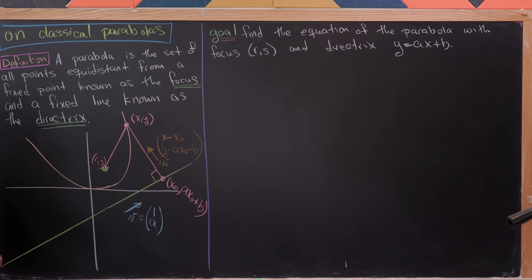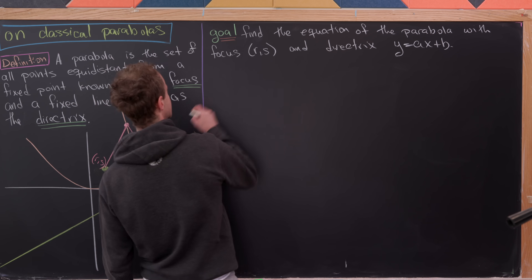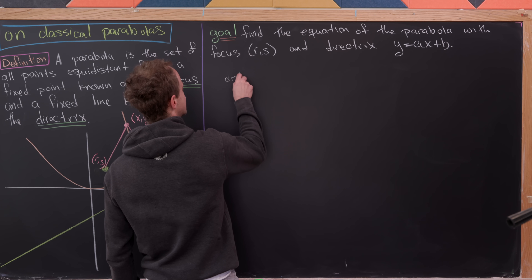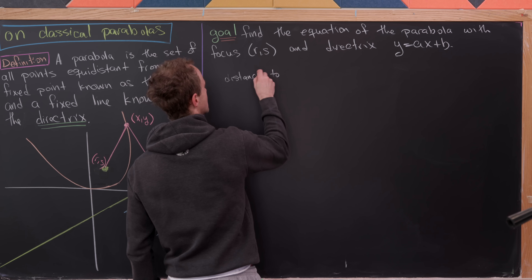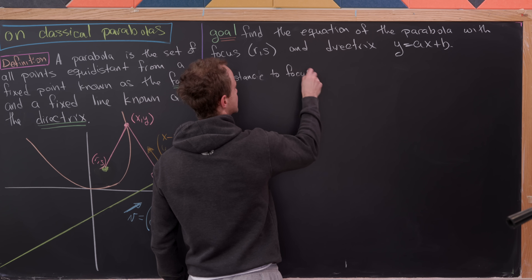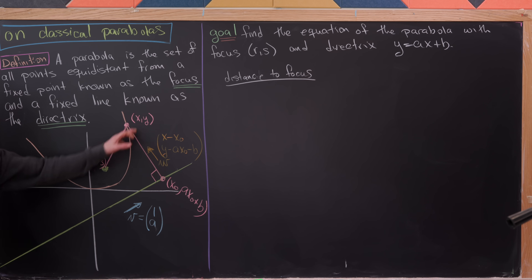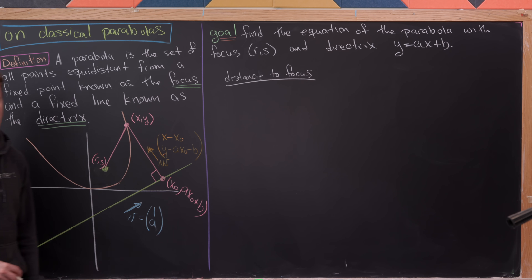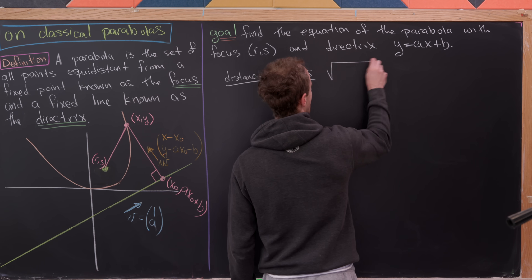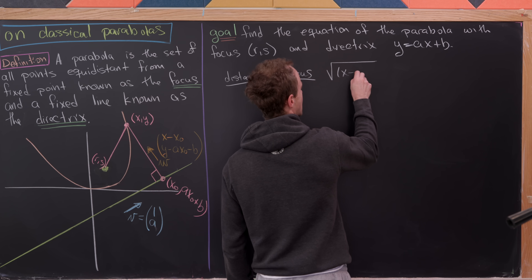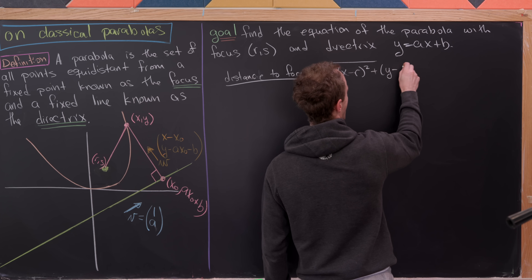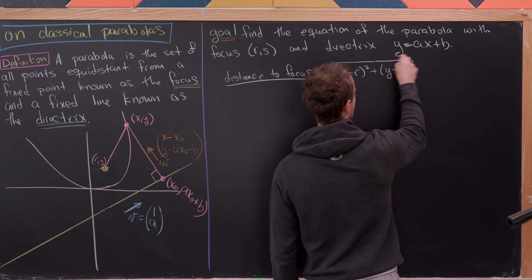Let's start filling in the data. First, the distance to the focus is straightforward using the distance formula. With our arbitrary point (x, y) and focus (r, s), that gives us the square root of (x minus r) squared plus (y minus s) squared.